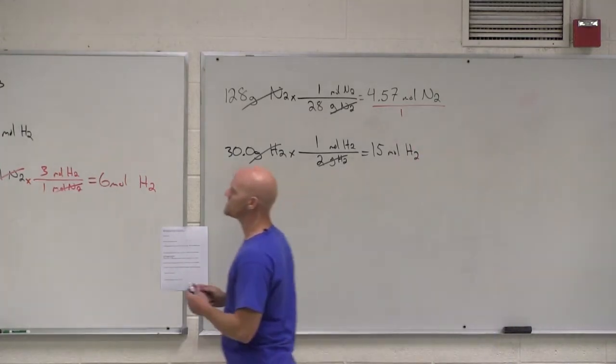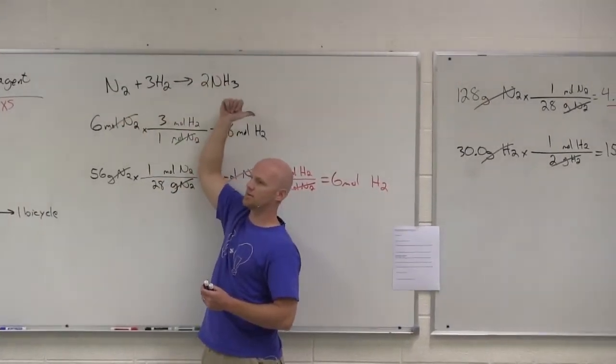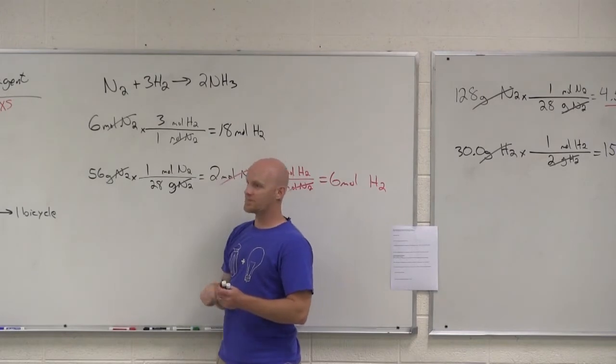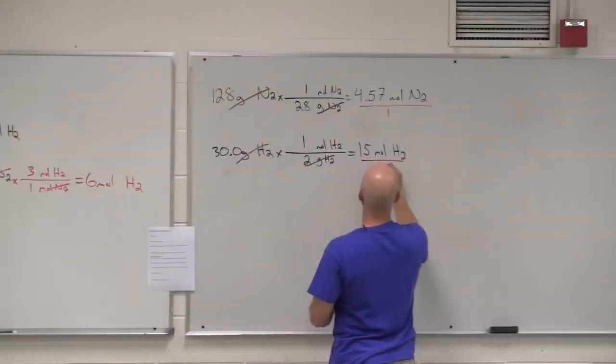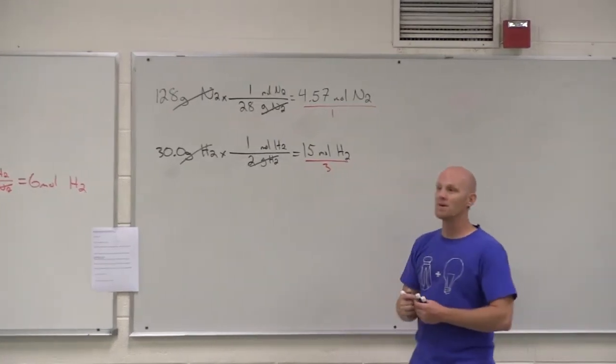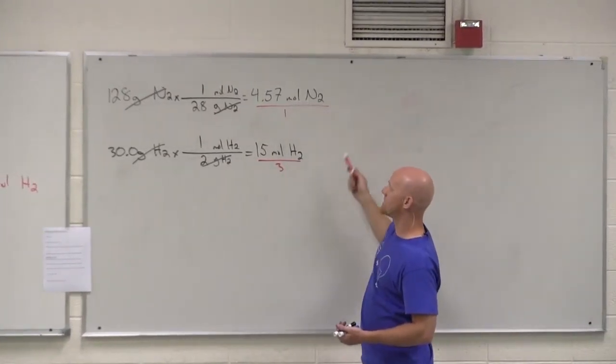So, essentially, I'm just dividing by its coefficient to find out how many times we can do it. So, with 15 moles of H2, how many times can we do this reaction as written? Five times. You divide by three, in this case. So, divide both of these by their coefficient, which everyone leads to a smaller number, is your limiting reagent. And it's going to be this guy. It leads to 4.57 versus 5.